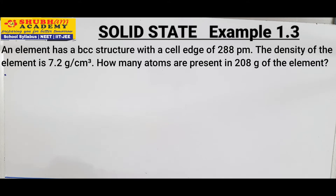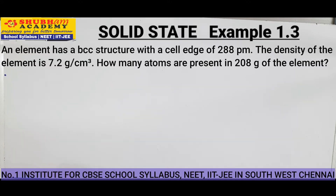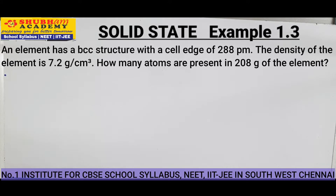Hello and welcome to today's class. In today's class, we are discussing Example 1.3 of solid state of class 12th chemistry. The question says: an element has a BCC structure with a cell edge of 288 PM. The density of the element is 7.2 gram per centimeter cube. How many atoms are present in 208 gram of the element?